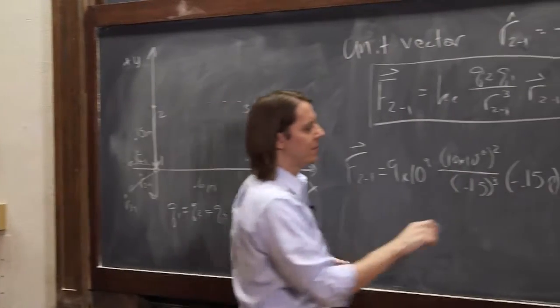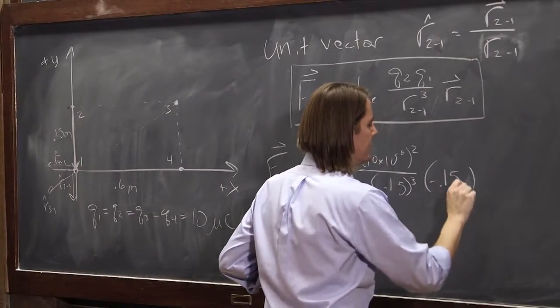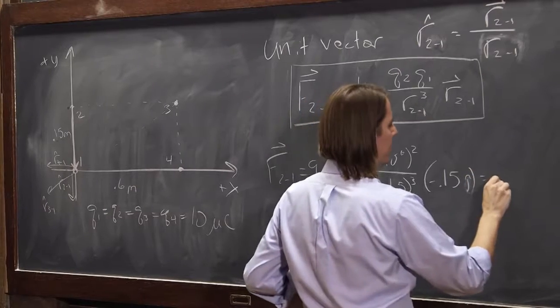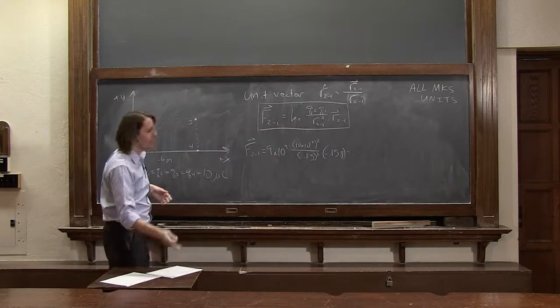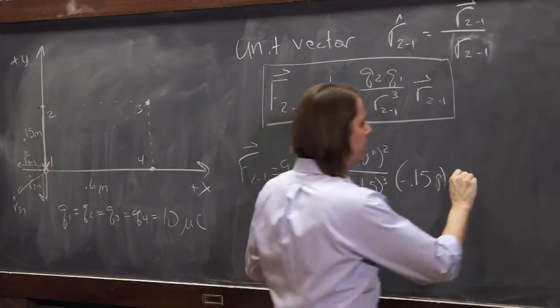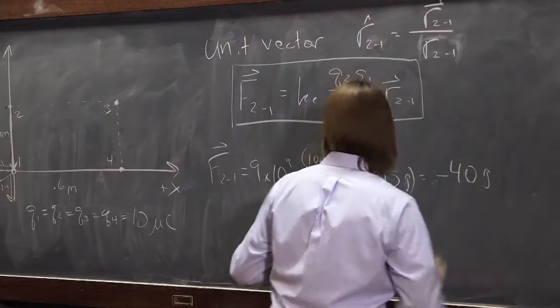If you multiply that out, you get minus 0.15 j hat direction. You get minus, if you multiply that out, you get minus 40 j hat.